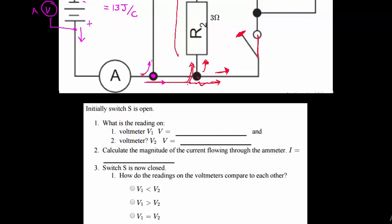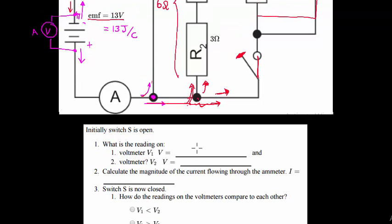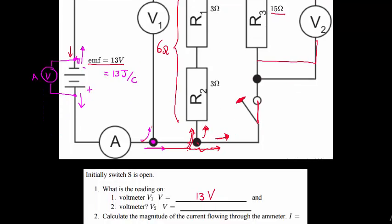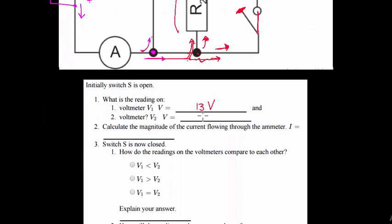Second question: what is voltmeter V2 reading when the switch is open? Since the switch is open, there is no current flowing into the second branch where V2 measures over R3. There are no coulombs passing through, so no energy is spent per coulomb — V2 reads zero volts.